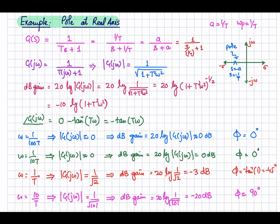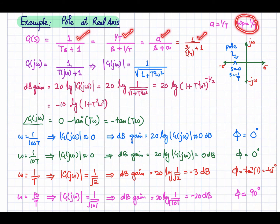In this video we are going to discuss the Bode plot of a pole at the real axis. Let's consider a pole at the real axis at position s = -a, or s = -1/τ. This can be represented in the form of a transfer function, and different textbooks use different forms — all of these are equivalent. 1/τ is basically the frequency of your pole, also represented as ω_p, the pole frequency.